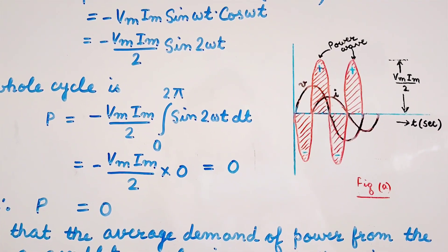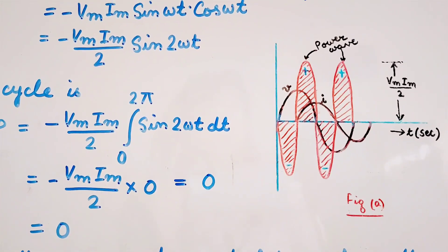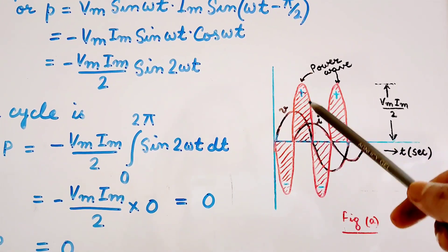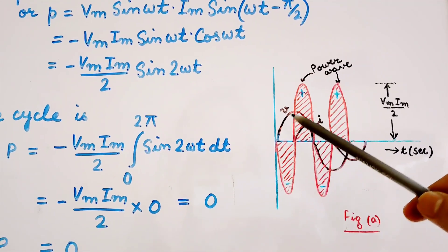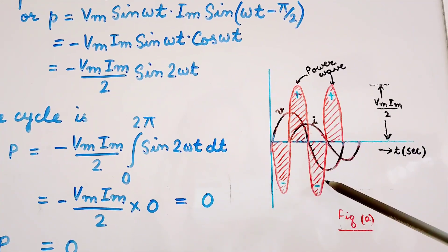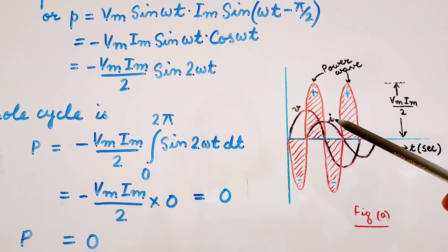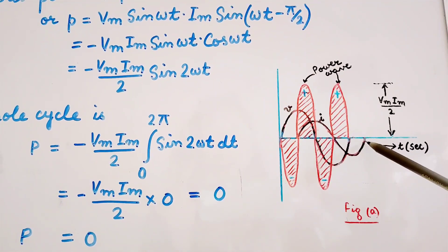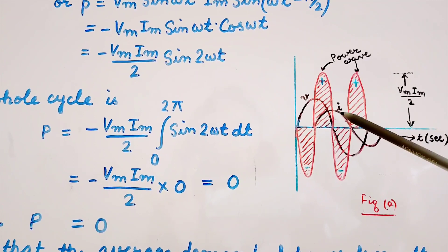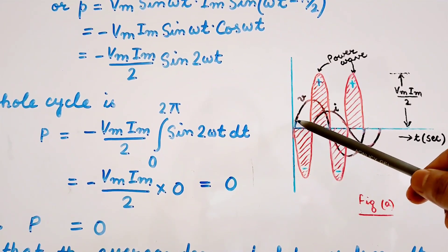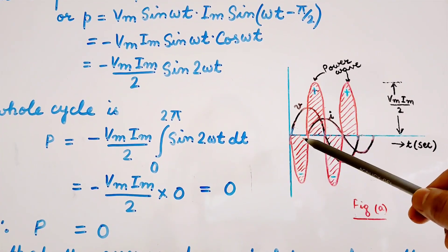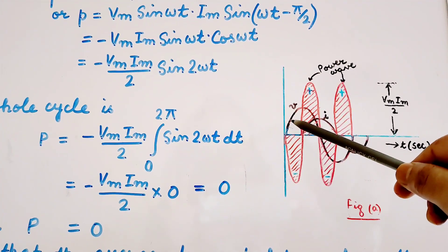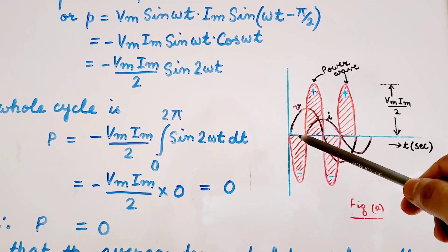Figure A shows the plot of all three alternating quantities: the instantaneous voltage V, instantaneous current I, and the instantaneous power p. In case of an inductor, this is the plot of the voltage, and the current lags behind the voltage by 90 degrees. The graph of power is obtained by multiplying the value of the voltage and the current at each time interval.